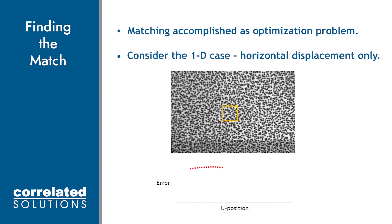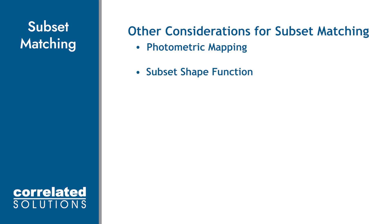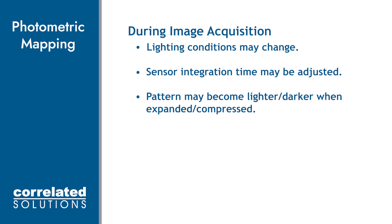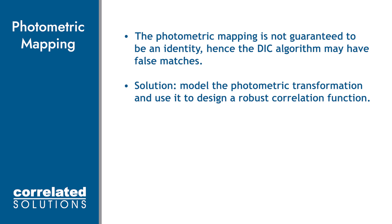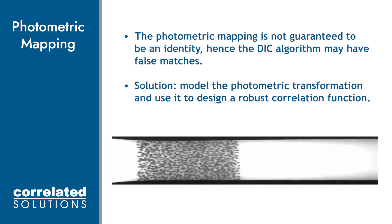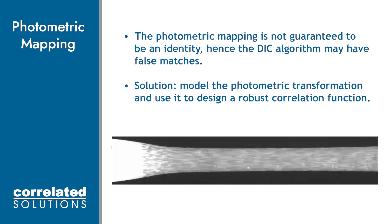This animation shows the result of the error function or the correlation function as we track for the position that the subset moved to. During the temporal matching of the subsets, there are some other considerations that the algorithms account for, such as photometric mapping and subset shape function. During testing, it is common for lighting to change, variations in exposure time to be present, and the pattern and dots themselves can often become lighter when stretched and darker when compressed. In order to account for those things, a photometric transformation is used in the correlation function. This transformation allows for the entire subset to get lighter or darker but does not account for lighting conditions that are more problematic for DIC, such as sharp shadows across or within the subset and glare and reflections on the surface. We will cover those conditions further in the best practices presentation.